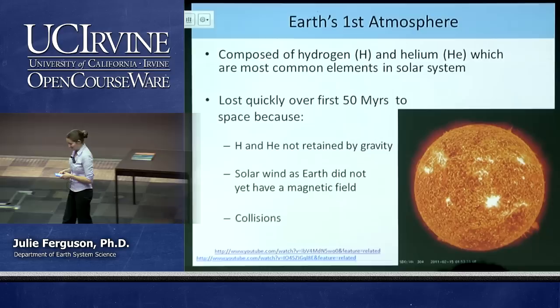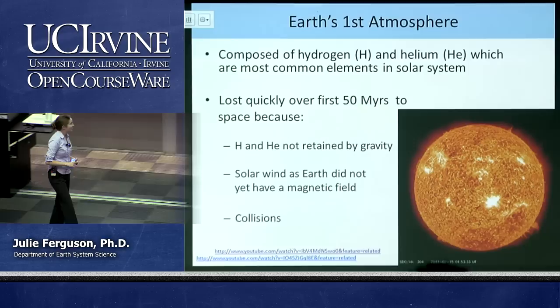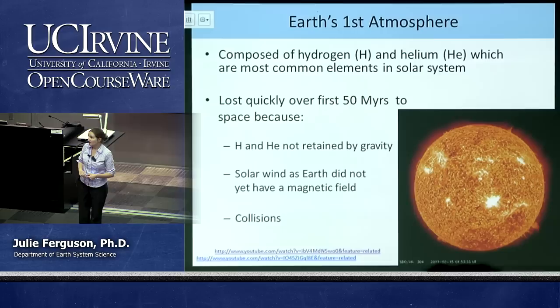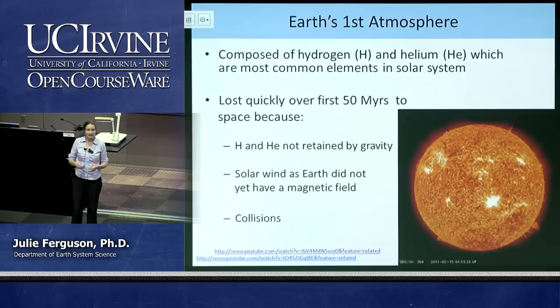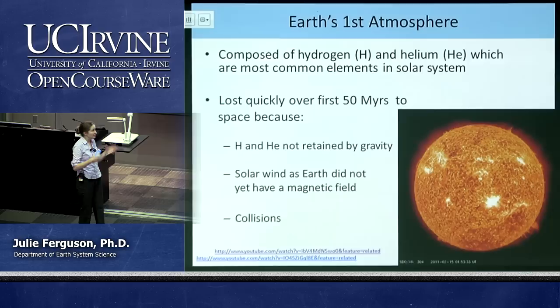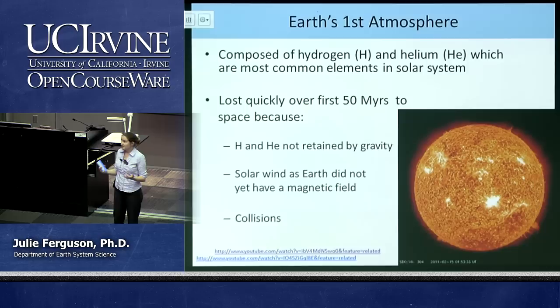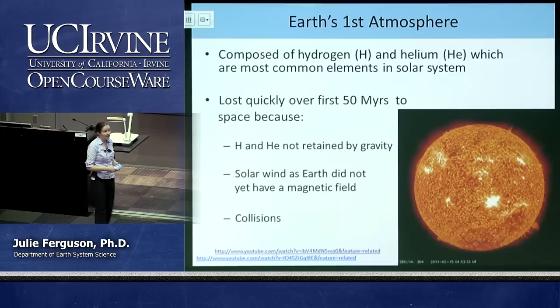Another reason we lost that early atmosphere was that we didn't have a magnetic field yet, which is actually really important for retaining our atmosphere. Mars has lost a lot of its atmosphere because hydrogen, helium, and other gases have been stripped away by the solar wind — a stream of highly energetic particles from the sun. Our magnetic field deflects that solar wind, but on Mars it just slams into the planet and carries those gases away. So our magnetic field is really important for retaining our atmosphere and enabling life on this planet.